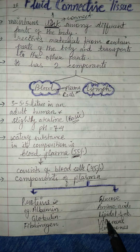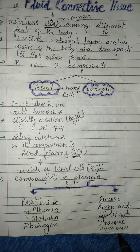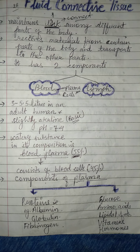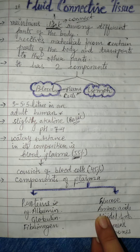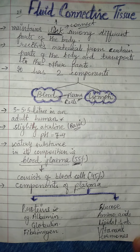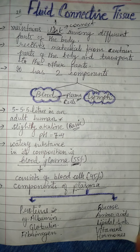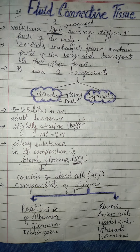Overall, plasma contains proteins, glucose, amino acids, lipids, vitamins, and hormones. This is all about the introductory part of fluid connective tissue. In the next lecture we will discuss it in more detail. Thank you students.